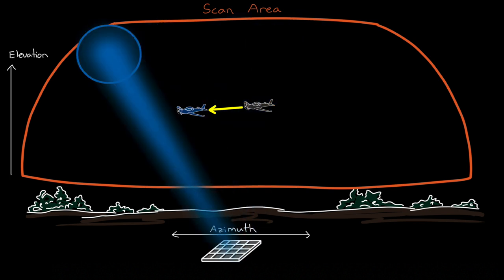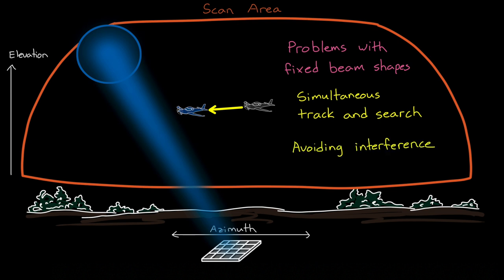Now, a phased array is all well and good. But there are some problems that a fixed beam shape like this can't easily address, even if that beam is steerable. And I want to talk about two of them in this video. The first is related to this simultaneous track and search problem that we just walked through. And the second is in regards to dealing with other interferences and radar scatterers in the environment. Both of these can be addressed with digital beamforming.